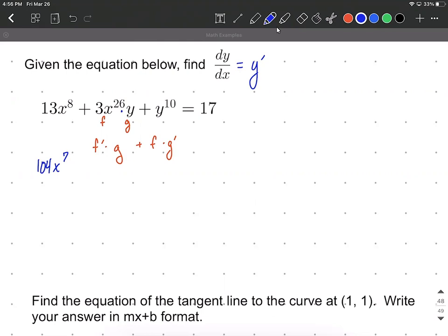All right, so first of all, the derivative of 3x to the 26, we're going to bring the 26 down, use our power rule, multiply it by the 3. So we're going to have 78x to the 25th power. As we reduce, 26 minus 1 makes 25. And then you bring g along, which is simply y.